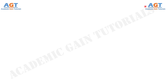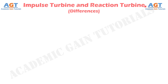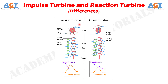Welcome to academic game tutorials. In this video, we will discuss the major differences between impulse and reaction turbine. Both types of turbine are used in power plants for the generation of electricity. Instead of their same work of producing electricity, they are differing from each other in many aspects.